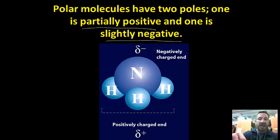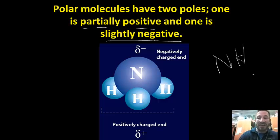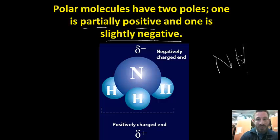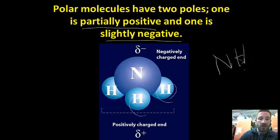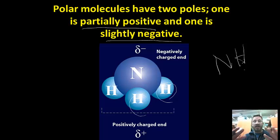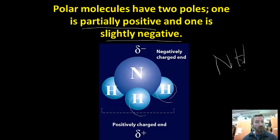An important example is ammonia, NH3. In ammonia, we have three hydrogens which are partially positive, and the nitrogen is partially negative. There's no way those can cancel — the molecule is asymmetrical, not symmetrical — so ammonia is a polar substance.